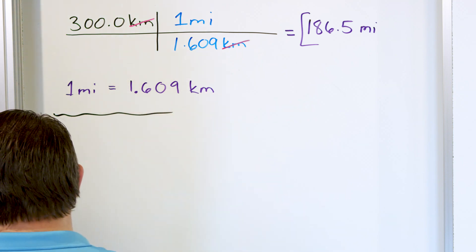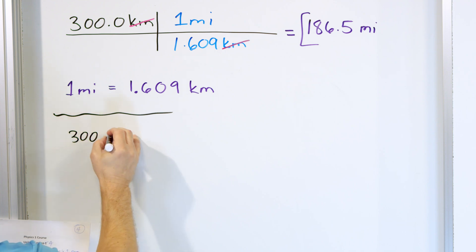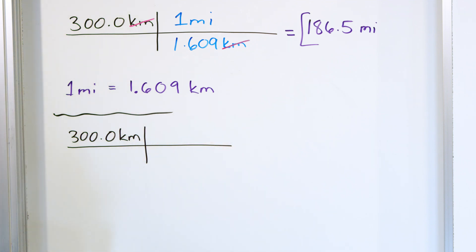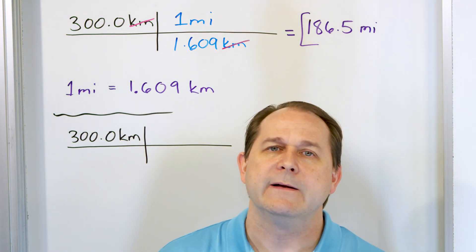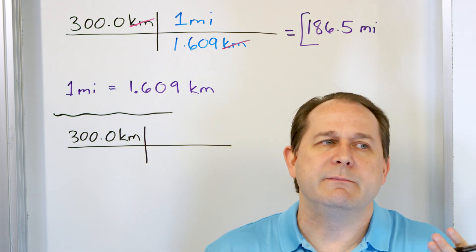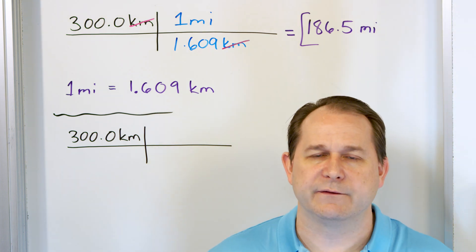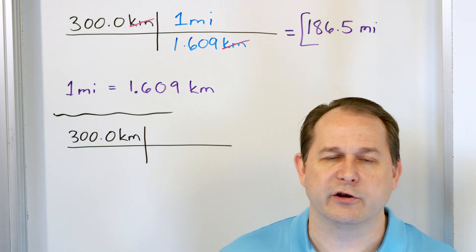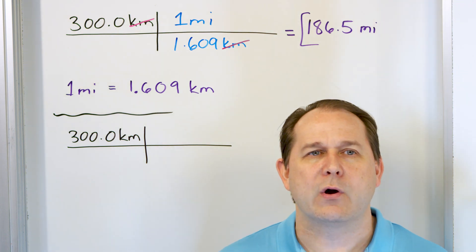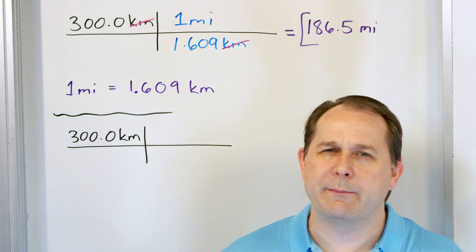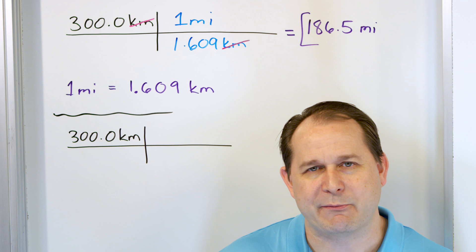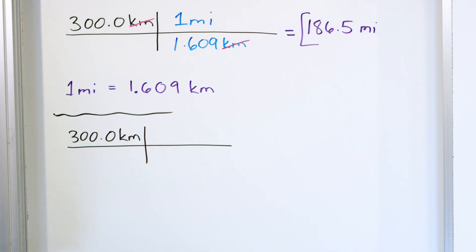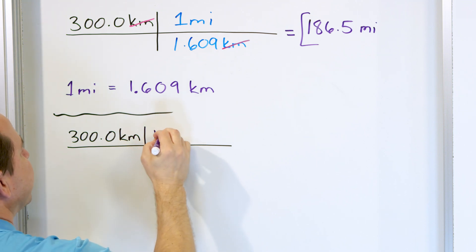Let's do the second part. We want to convert 300.0 kilometers into millimeters. Do you know a unit conversion that goes directly from kilometers to millimeters? I actually don't know of one right now. Most of the time you have to do a multi-step conversion process because we only know a handful of unit conversions. For instance, I know 1,000 meters equals one kilometer. I don't know how many nanometers are in a picometer, or how many centimeters are in a gigameter. So stop trying to remember them — just use the ones you know and inch your way there. I know that one kilometer is 1,000 meters.